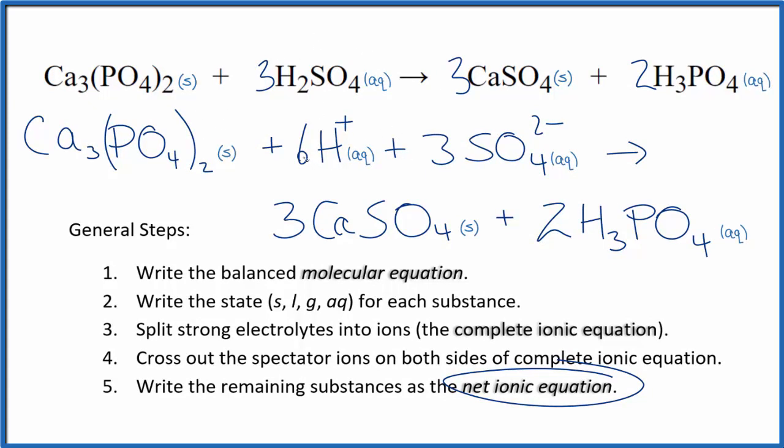Note that charge is balanced. We have six times one plus, that's six plus, three times two minus is six minus. So the six plus, six minus cancel out. This whole side here adds up to zero.